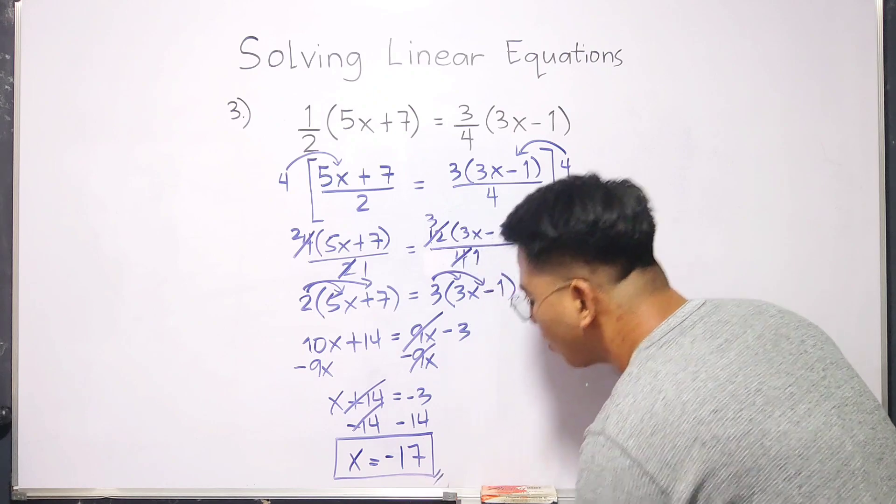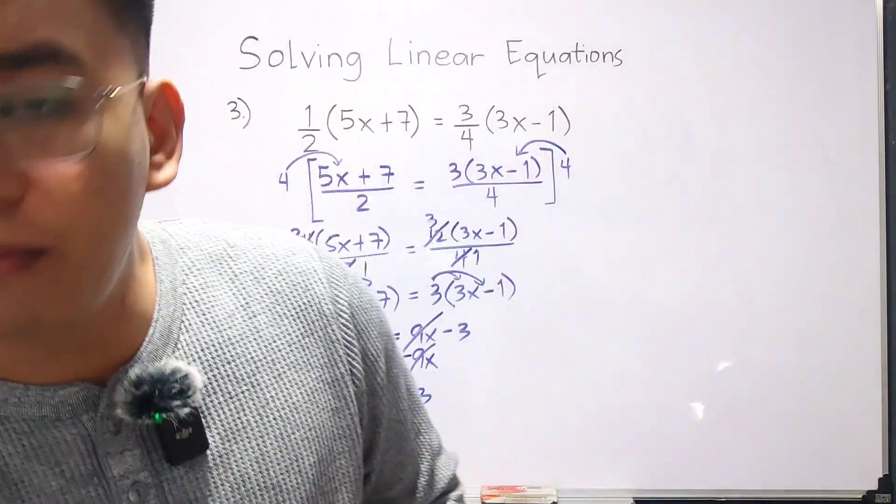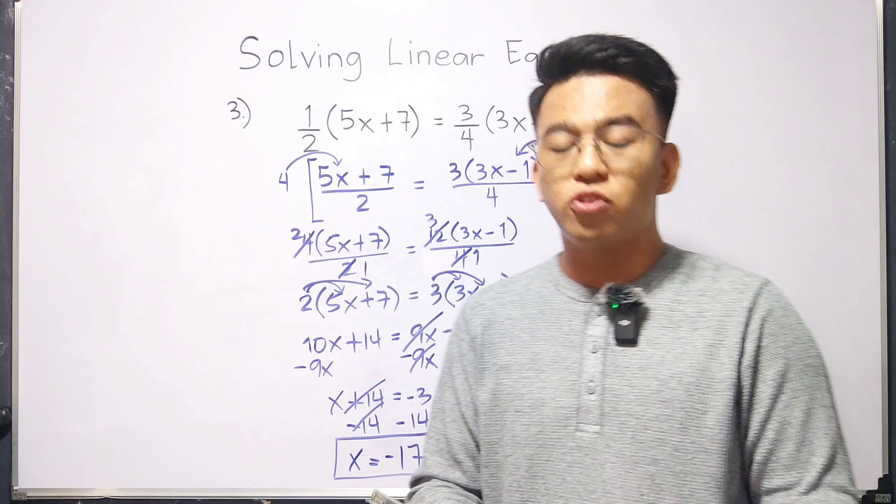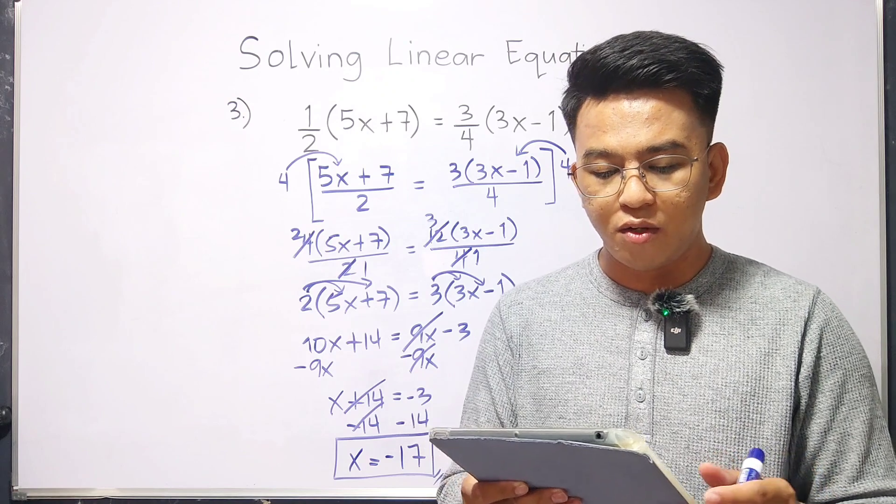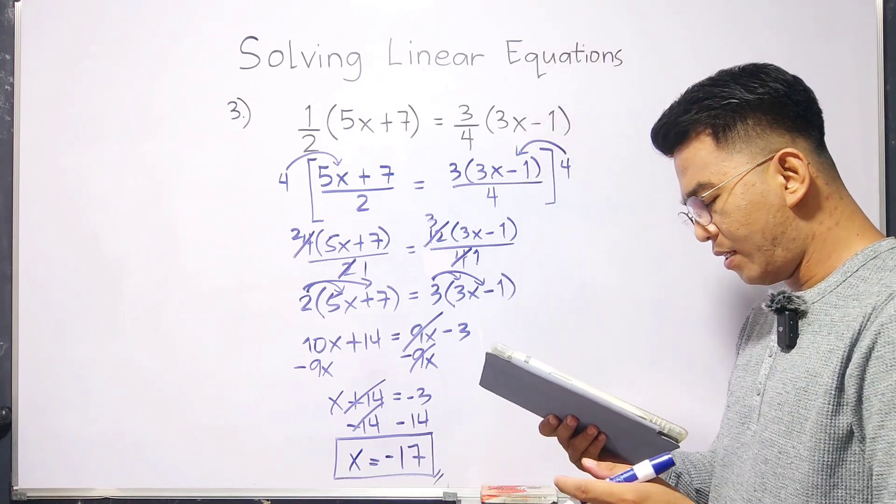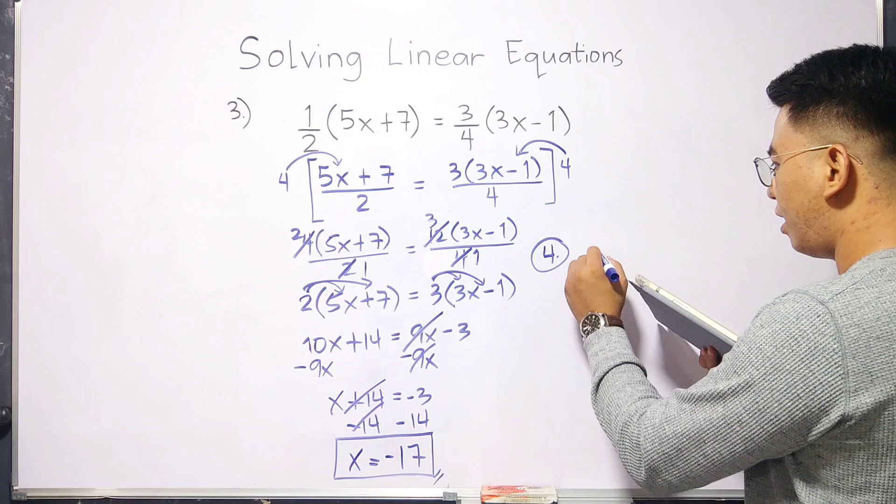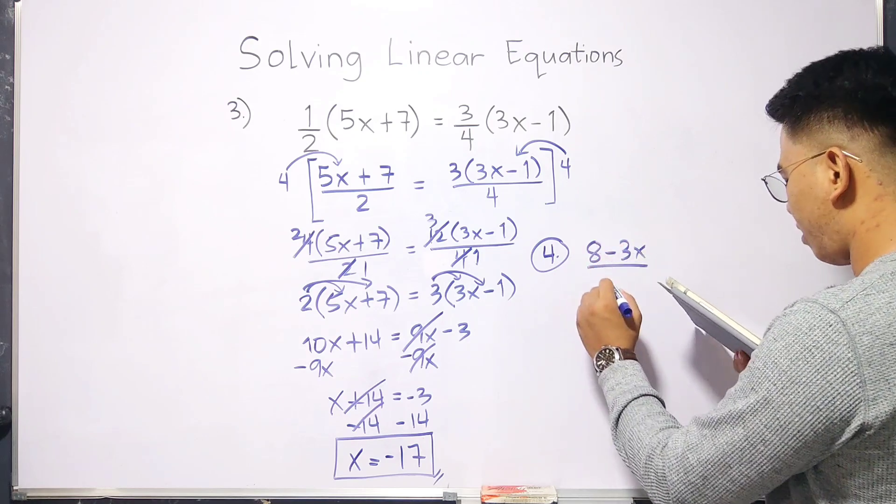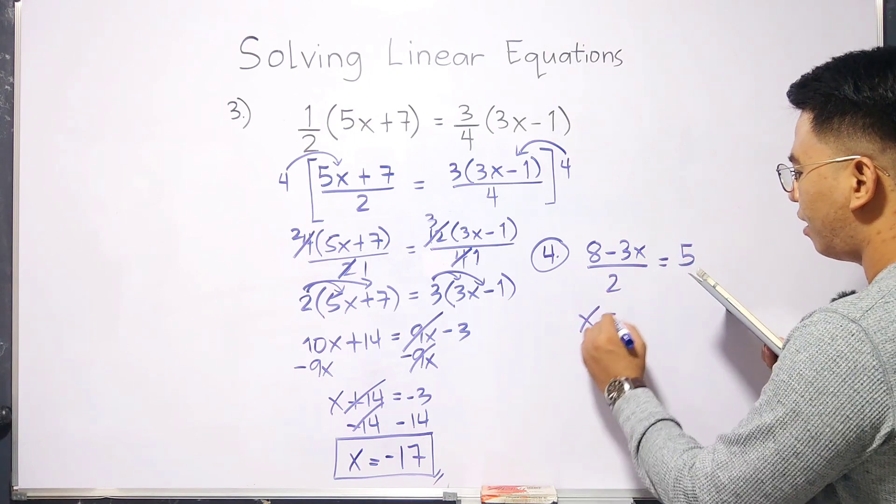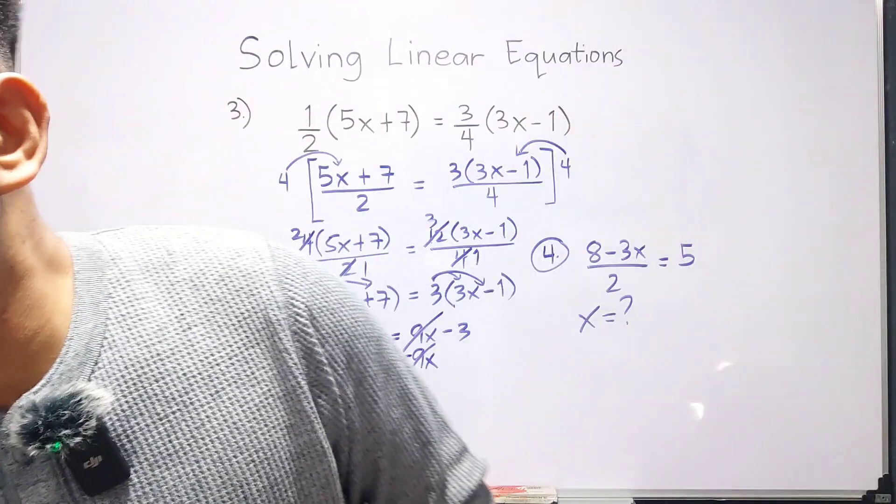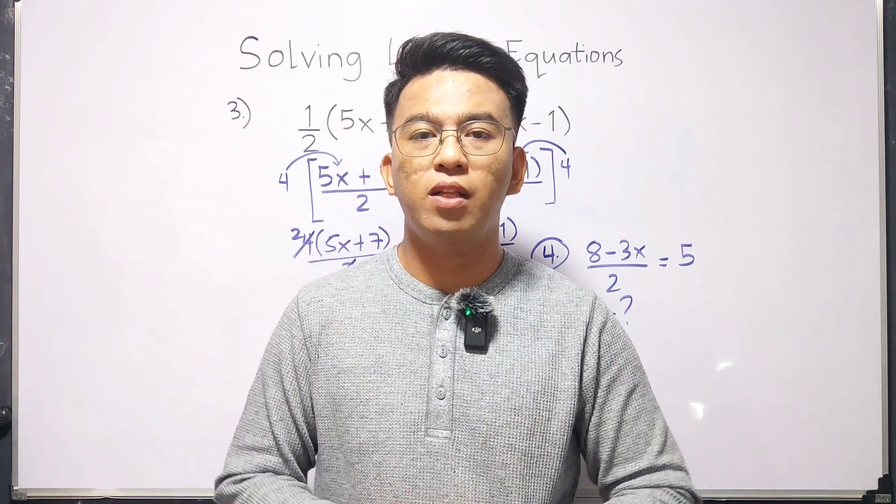So, that's it, guys. I hope you learned something from this video. And as part of our routine, I will give you a problem wherein you need to solve this one. And I hope that I will see in the comment section the solution for this specific problem. For number 4, you will be solving 8 minus 3x over 2 is equal to 5. Find x. So, I hope, guys, that you learned something from this video on how to solve linear equations in one variable.